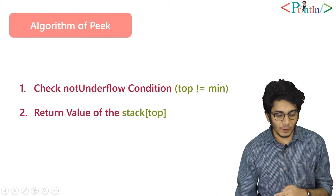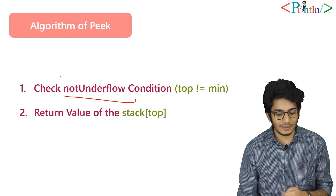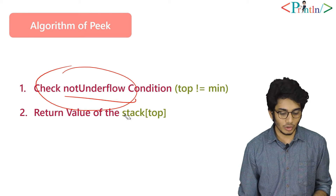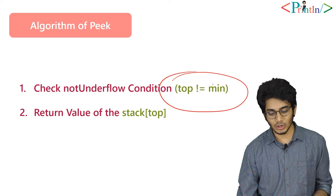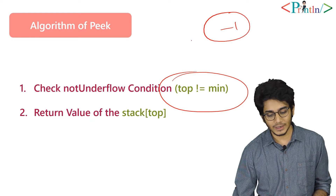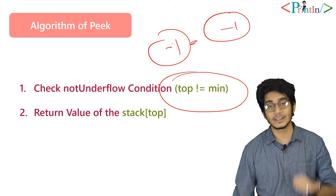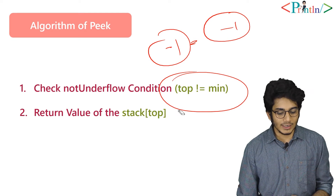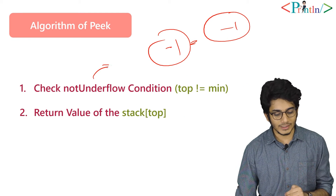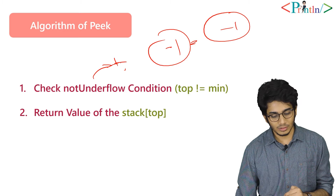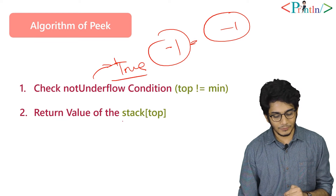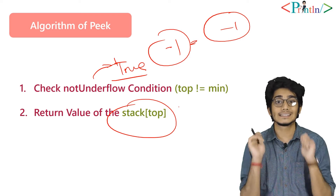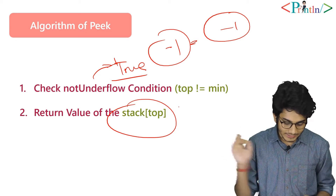So what are the steps we have to follow? We have to check first that our stack is in underflow or not. We check that top is not equal to minus 1. If top equals minus 1, then we can't return any value. If it returns true — meaning the stack is not in underflow — we'll return the value at the top of the stack.